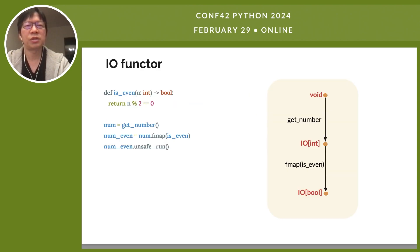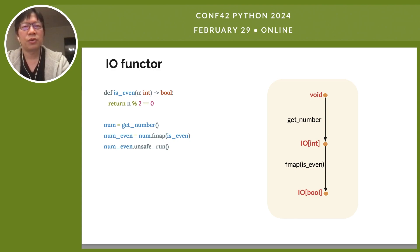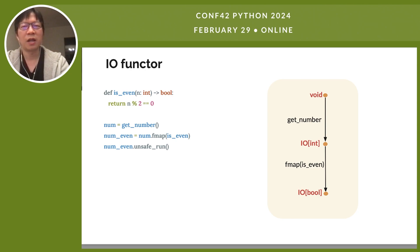The code here shows what we can do with the IO object returned by the getNumber function. Even though no actual IO has happened yet when we call getNumber, that does not stop us from mapping the isEven function over the nonexistent number. Eventually, when we are finally ready to incur the actual IO, we will do so by calling the unsafeRun method on the IO object. With the IO functor, we are able to keep the kernel of our code free of side effects and push the actual IO actions to the boundary of our program.